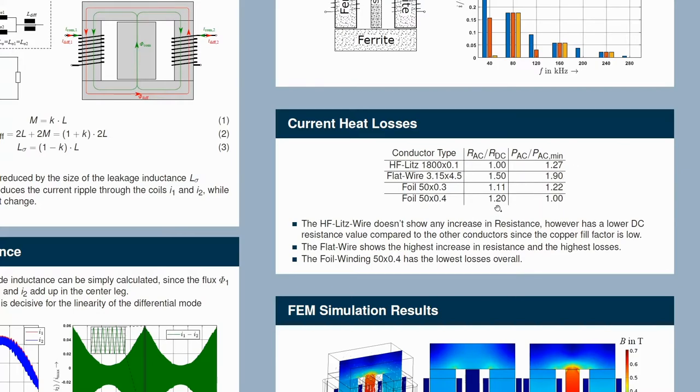So actually, even though we have higher skin proximity effects, we have overall lower losses due to the lower DC resistance. So we chose the foil winding 50 times 0.4.